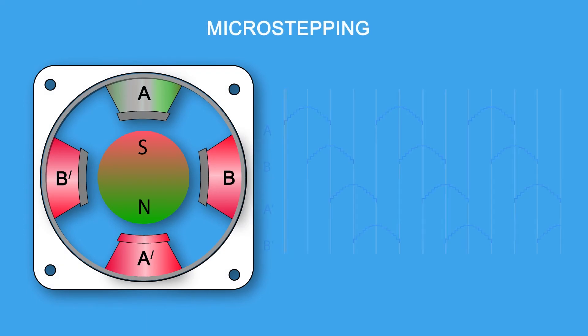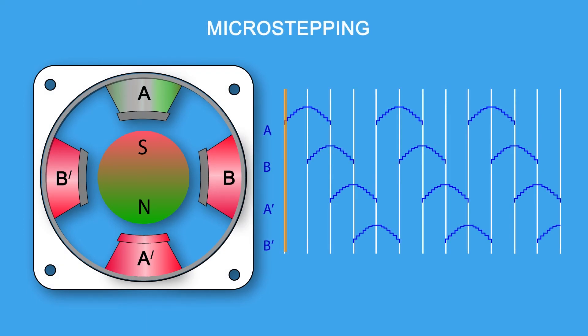Micro stepping. Micro stepping is a way to make small steps even smaller. The smaller the step, the higher the resolution and the better the vibration characteristics. In micro stepping, a phase is not fully on or fully off. It's partially on.